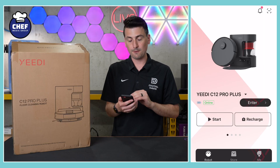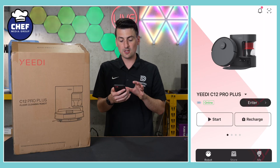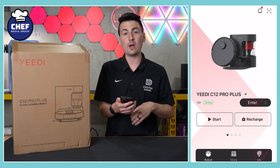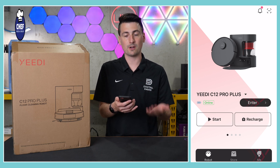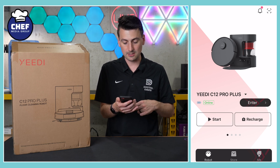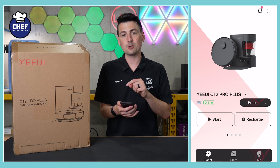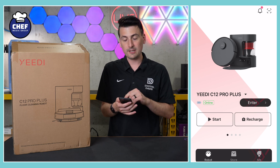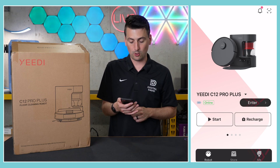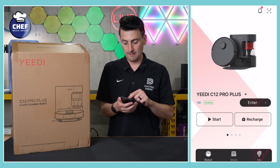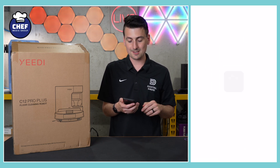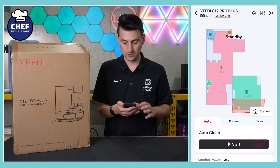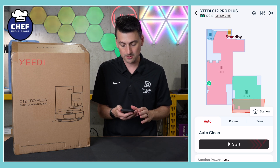First things first, when you're looking at the mobile app, here's what our device will look like set up, where from the screen we have a couple of quick options. We can enter into our map and device settings, we can start a clean or have it return home to charge. In this case, we want to select enter to be taken into our device to view more settings and features.